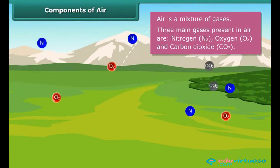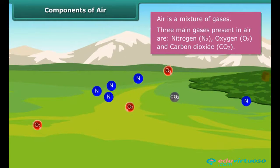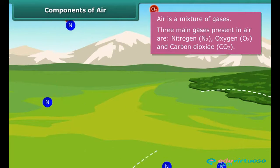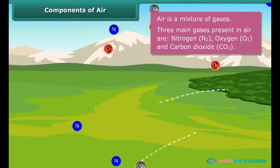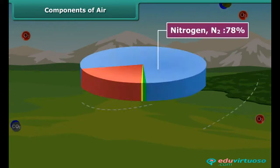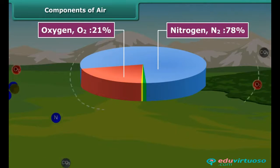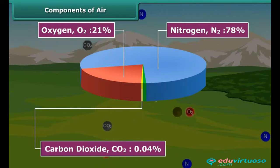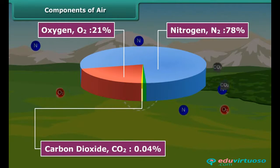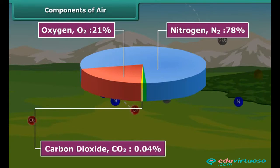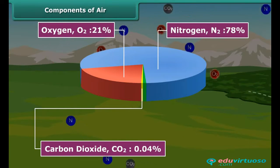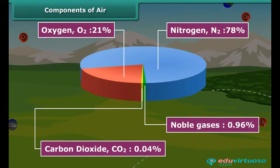Three main gases present in air are nitrogen (N₂), oxygen (O₂), and carbon dioxide (CO₂). Nitrogen forms 78%, oxygen 21%, and carbon dioxide 0.04% of the air. Besides these three gases, air also contains water vapor, dust particles, and some other gases known as noble gases.